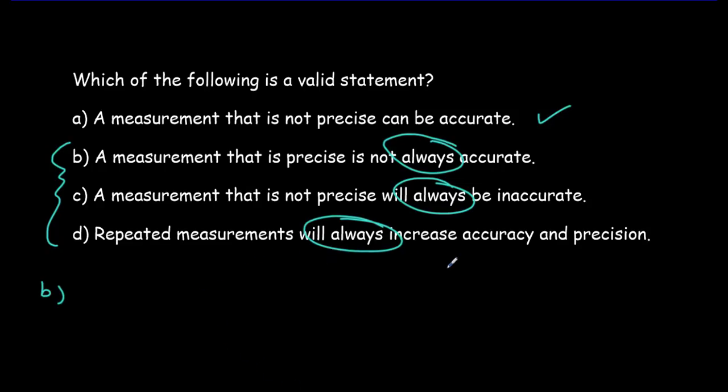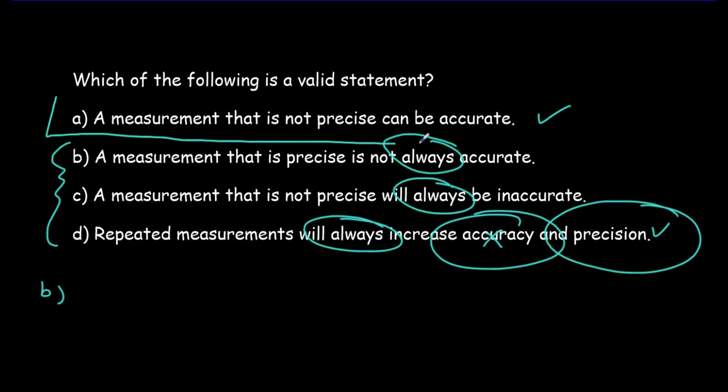Repeated measurements will always increase accuracy and precision. Well, repeated measurements always increase precision, but they don't help with the accuracy because there's some systematic error that's not going to be corrected for by more measurements. So the correct answer is A here, which is really saying that precision and accuracy are independent of one another.